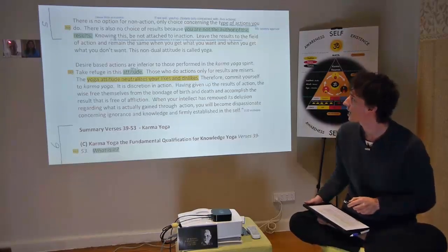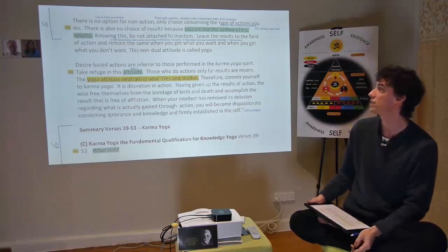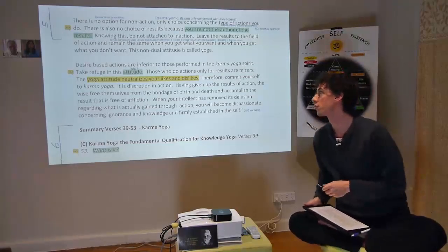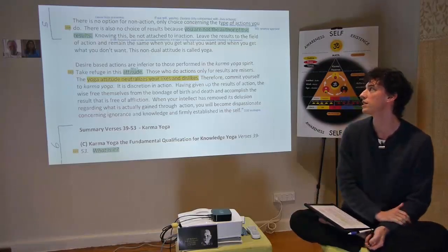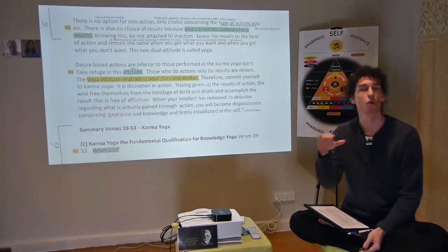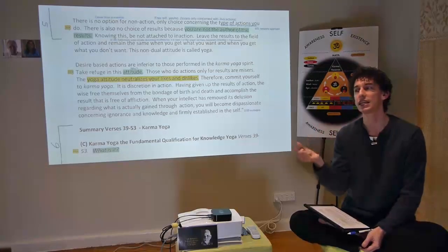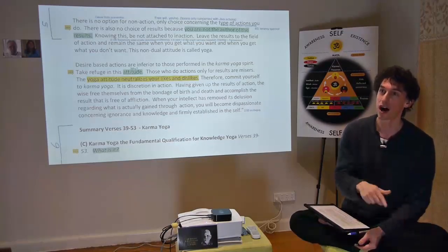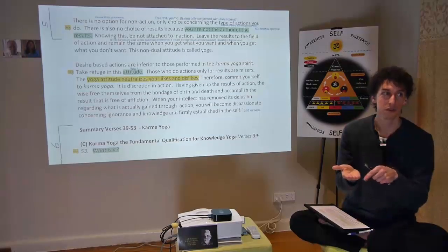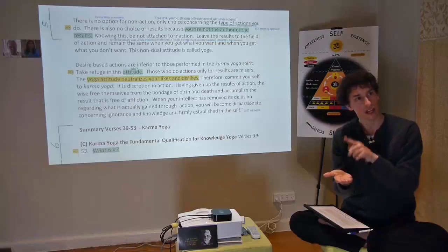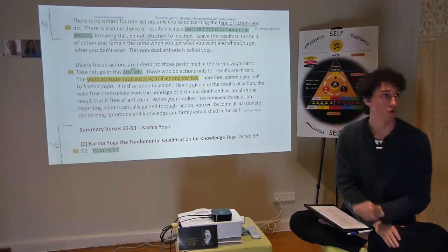Leave the results to the field of action and remain the same whether you get what you want or what you don't want. Verse 2.48: samatwam yoga uccete — yoga is the equipoise of the mind. That implies an equanimous attitude to yes or no. A mind with bias for likes moves when interfacing with the world; a mind totally neutral to yes or no cannot move. And verse 2.50: yoga karmasu kaushalam — skill in action.